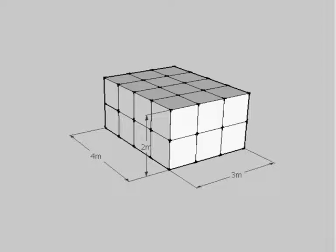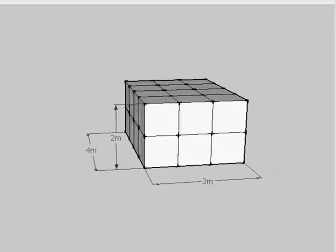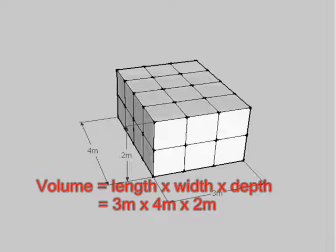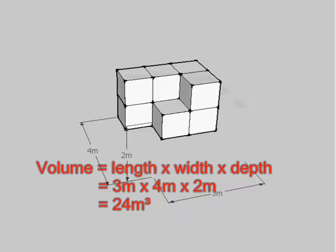And there you go. I've separated it up into all these little boxes here. Now, the way that you'd work out the volume is very simple. You just multiply the length, the width and the depth, which is 3 times 4 times 2, which will give you the answer of 24 cubic metres. And you write that as metres with a little 3 above it, meaning cubed. There's three sides you're dealing with.